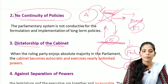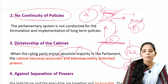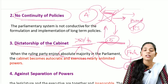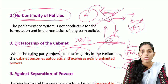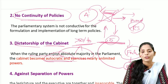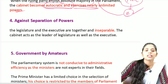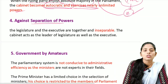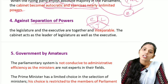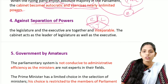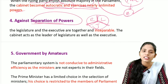The next demerit is the dictatorship of the cabinet. When the ruling party enjoys absolute majority in the parliament — more than 50 percent of the total membership of the house — the cabinet becomes autocratic and exercises unlimited powers; it can pass whichever bill it wants. The next demerit is that it goes against the separation of powers. In the presidential system, the executive, legislature, and judiciary are three separate entities, but in the parliamentary system they are inseparable.